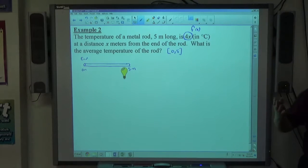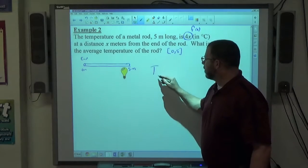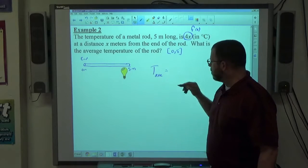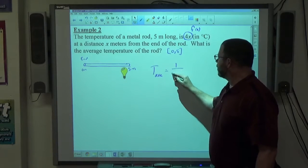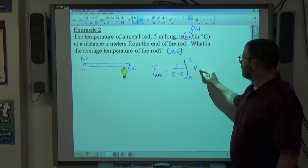So, again, we're trying to find the average value of anything. That's what we need. We need a function. We need an interval. Once we have both those pieces of information, the average temperature, I'm going to say T sub average, for average temperature, is 1 over 5 minus 0, integral of 0 to 5 of 4x dx.